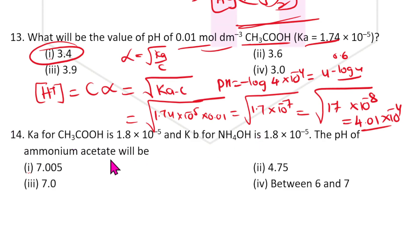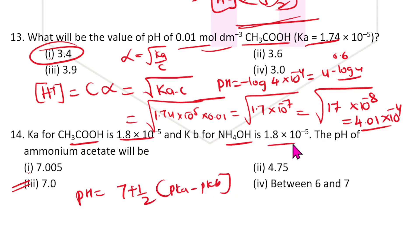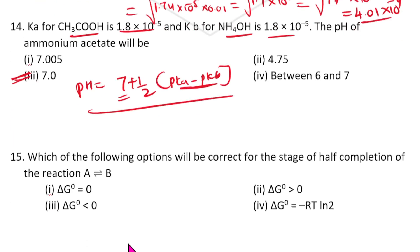Fourteenth question: For the salt of CH₃COOH and NH₄OH, the direct answer is 7. Ammonium acetate always gives pH 7. The formula is: pH = 7 + ½(pKa − pKb). Since pKa = pKb here, the difference is zero and pH = 7. Remember: if a salt is made up of weak acid and weak base with equal Ka and Kb, pH = 7.